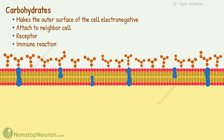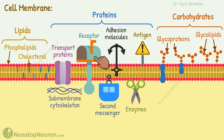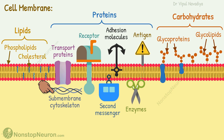So this was all about the cell membrane. Now let's have a quick summary. The cell membrane makes the outer wall of the cell. The central lipid bilayer is made up mainly of phospholipids and cholesterol. It's fluidic in nature and permeable to only lipid and lipid-soluble substances. Attached to the lipid bilayer are proteins that serve as transport proteins, receptors, second messengers, enzymes, adhesion molecules, submembrane cytoskeleton, and antigens.